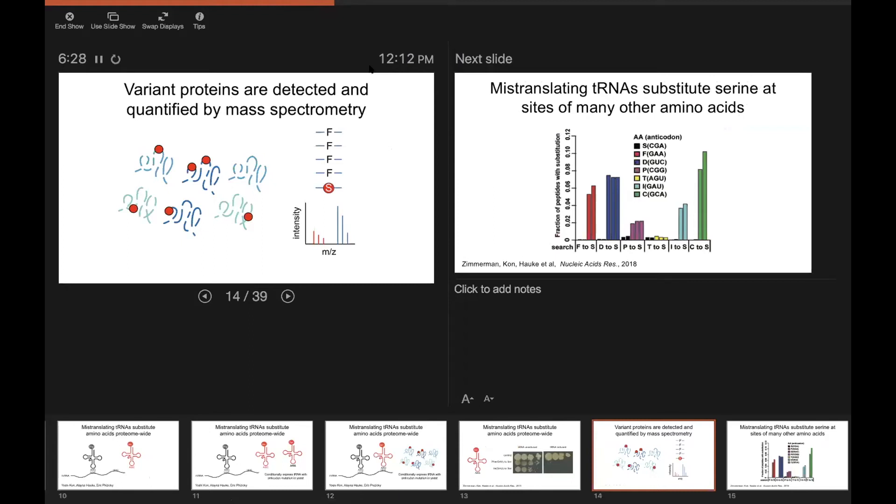And since these variants exist only at the protein level, we can't use the deep sequencing methods that we all know and love very well. So instead, we use mass spectrometry.